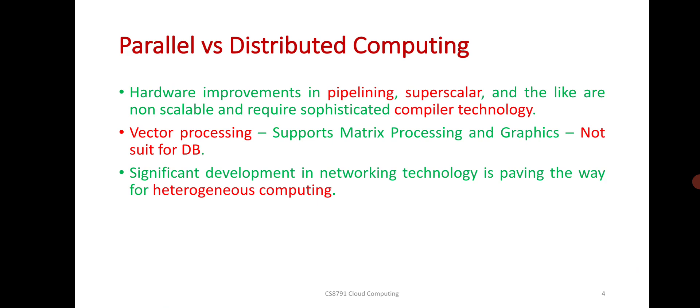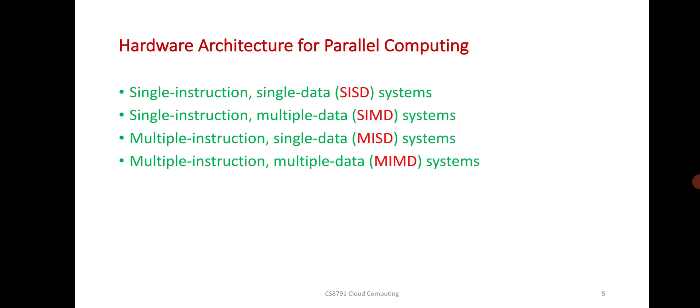Vector processing supports matrix processing and graphics, not suitable for databases. Significant development in networking technology is paving the way for heterogeneous computing. There are four types of systems.